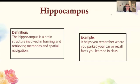Hippocampus. The hippocampus is a brain structure involved in forming and retrieving memories and spatial navigation. It helps you remember where you parked your car or recall the facts you've learned in class. Every time you see hippocampus, just think memory.